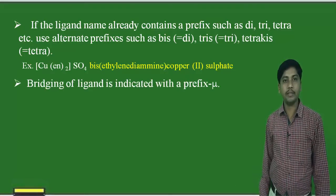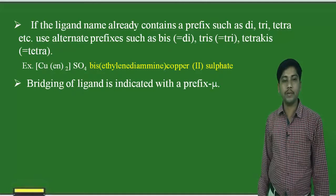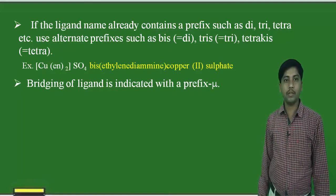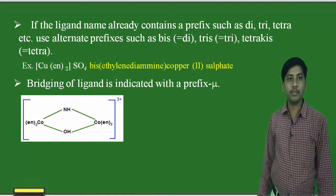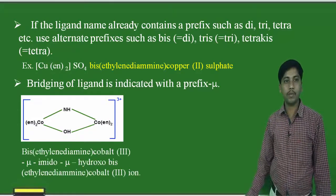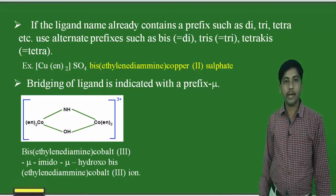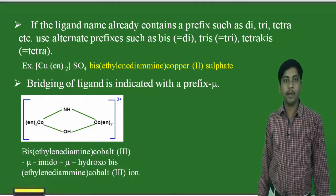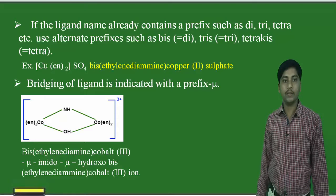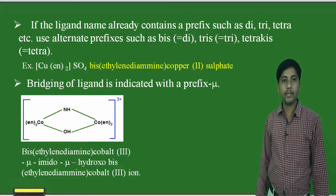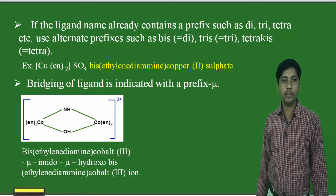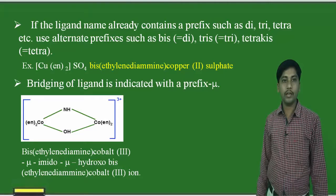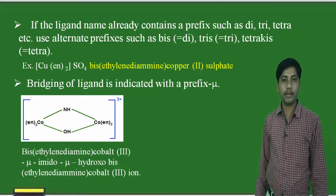Now, bridging ligands — ligands that bridge between two metal atoms — are named using the prefix mu (μ). The example complex is named bis(ethylenediamine)cobalt(III)-μ-imido-μ-hydroxo-bis(ethylenediamine)cobalt(III).